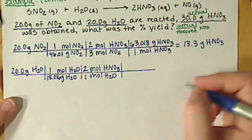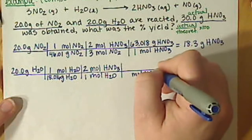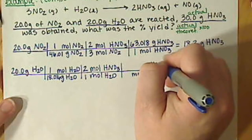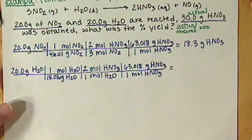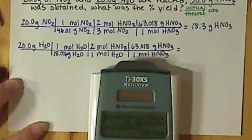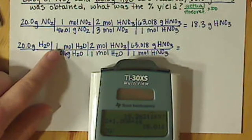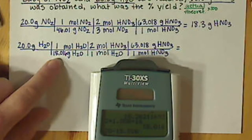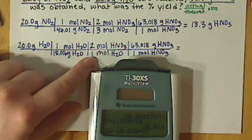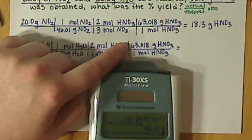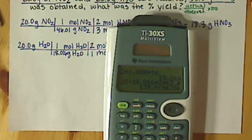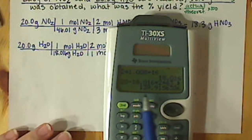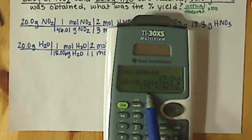And then our last step, just like the one above, we want to go from moles of nitric acid to grams of nitric acid. We have 63.018 grams per one mole. So we plug these into our calculator. 20 times 1 divided by 18.016 times 2 divided by 1 times 63.018. Divided by 1. And we get 139.9156. Three sig figs. So I have 139. I have to round up. So that ends up being 140. And I need my decimal point there.